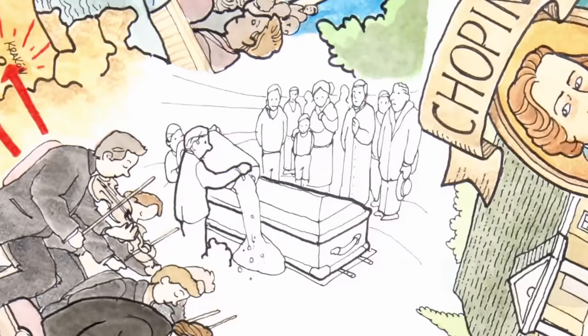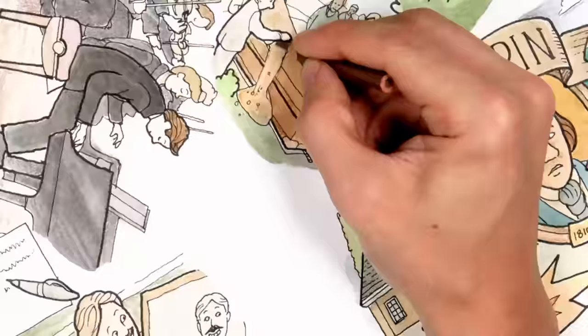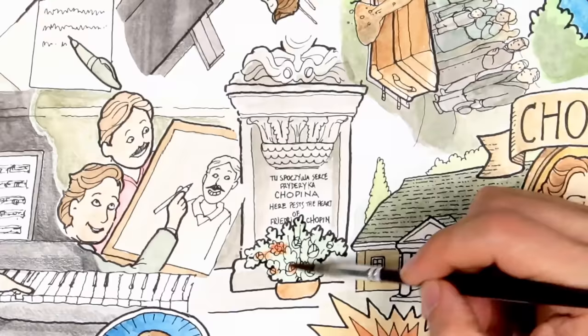Some of his Polish friends brought jars of Polish soil to cover his grave at Père Lachaise Cemetery, so that he could rest on Polish soil forever. According to his final wishes, his heart was removed, placed into a crystal urn, and taken to Warsaw by his sister. It remains there today, inside one of the pillars of the Holy Cross Church.